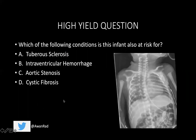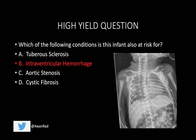Coming back to the high-yield question: this chest x-ray shows respiratory distress syndrome or hyaline membrane disease — notice the low lung volumes and diffuse granular hazy opacities. Because they're premature, they're at increased risk for intraventricular hemorrhage or necrotizing enterocolitis. The answer is B — intraventricular hemorrhage. Hope this was helpful. Please subscribe, like, and share this with everyone. Let's make sure everyone places in the 99th percentile on the USMLE. Thank you so much for your attention.